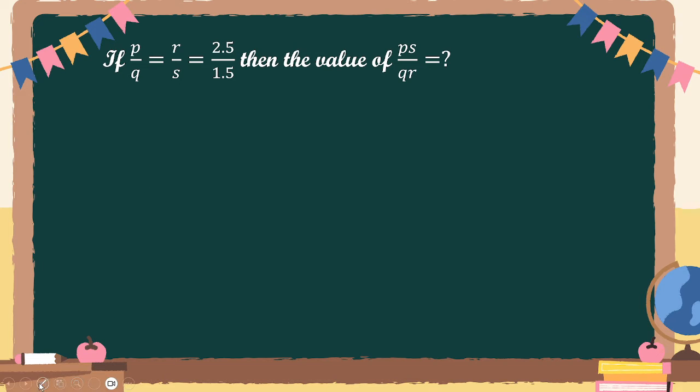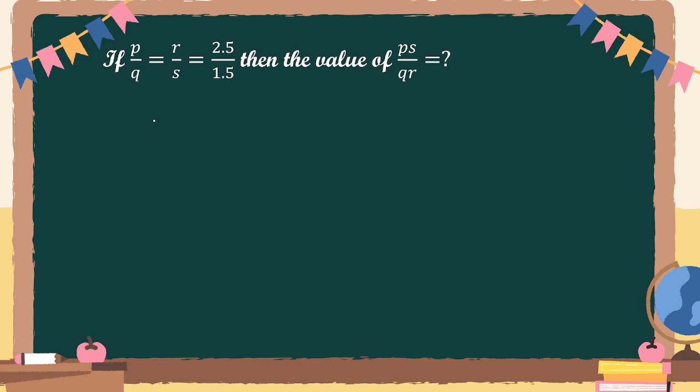So what they are asking for? They are asking you for the value of P into S divided by Q into R. What I observe, I can write this is same as P by Q into S by R.